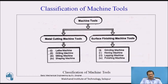Machine tools are broadly classified into metal cutting machine tools and surface finishing machine tools. Metal cutting machine tools remove the major part of the material to give the desired shape and size, whereas surface finishing machine tools remove very little material to give the desired finish, accuracy, or design fitting required.